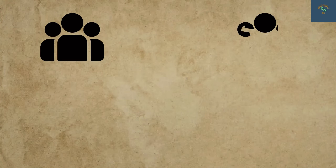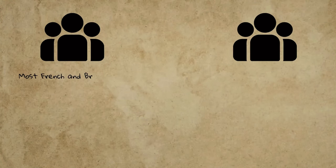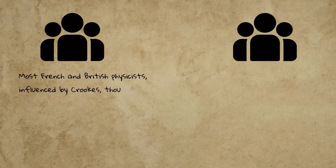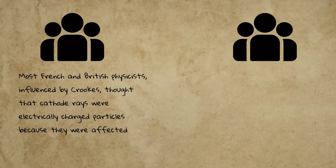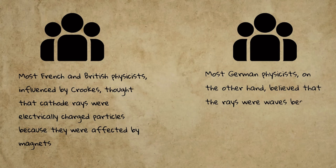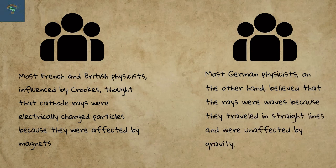Now by the late 1880s, the controversy over the nature of cathode rays had divided the scientists into groups. French and British scientists, influenced by Crookes, thought that the cathode rays were electrically charged particles, while German physicists believed that the rays were waves because they traveled in straight lines.